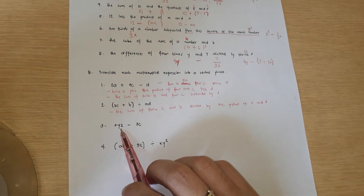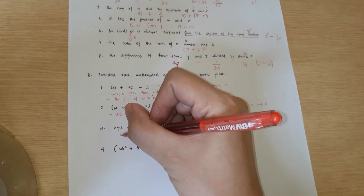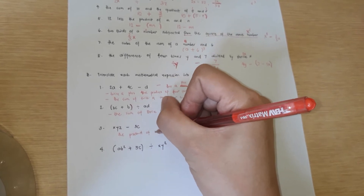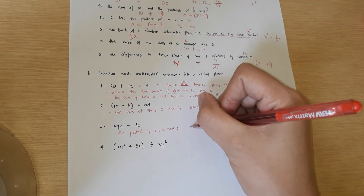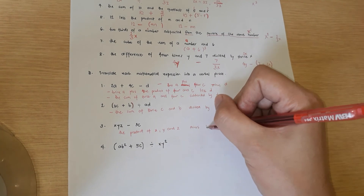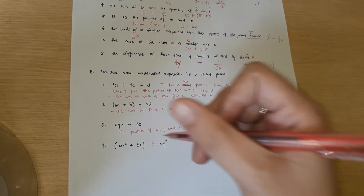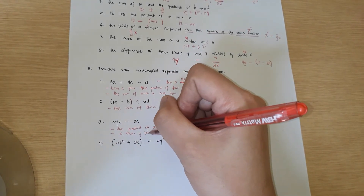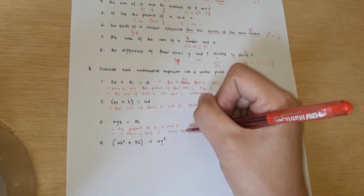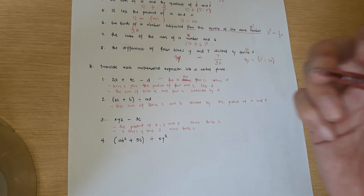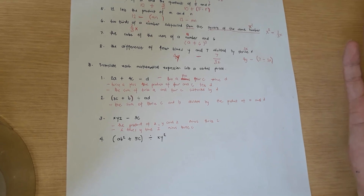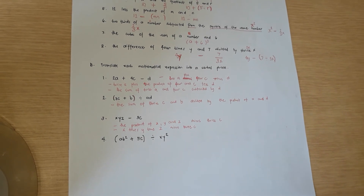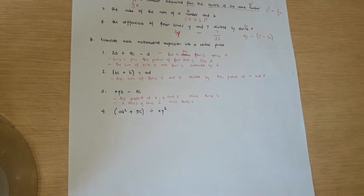Next: XYZ − 3C. Three letters placed together means they are multiplied, so XYZ is the product of X, Y, and Z. The expression XYZ − 3C can be stated as 'the product of X, Y, and Z minus thrice C,' or 'X times Y times Z minus 3C,' or 'the product of X, Y, and Z subtracted by 3C.' All are acceptable.